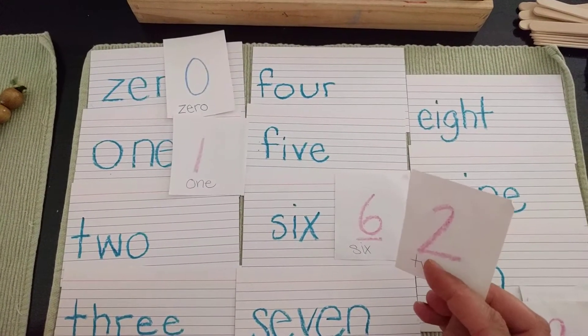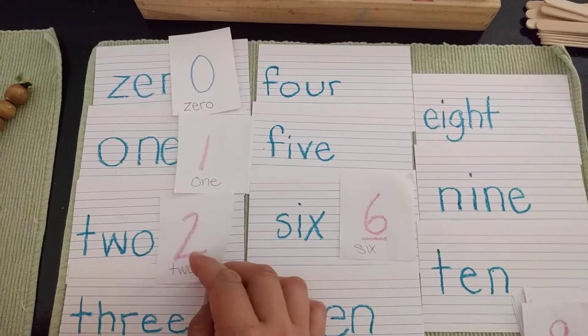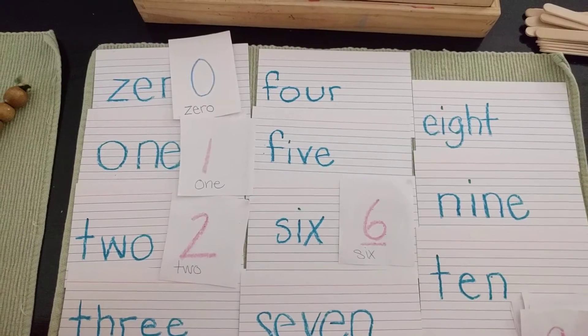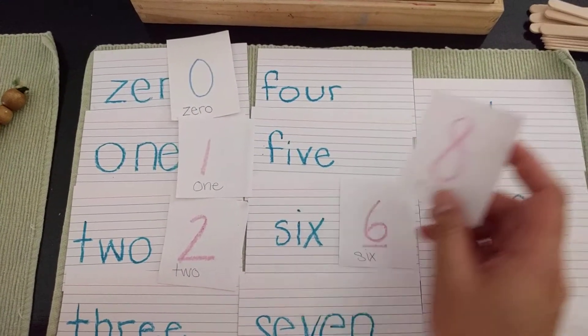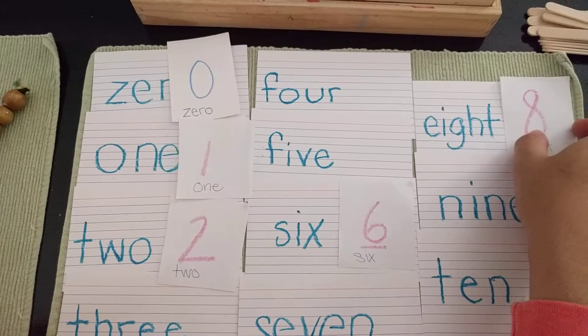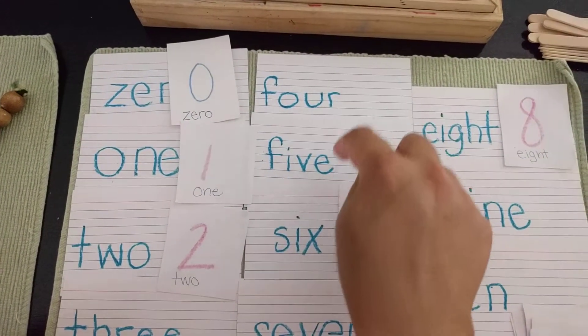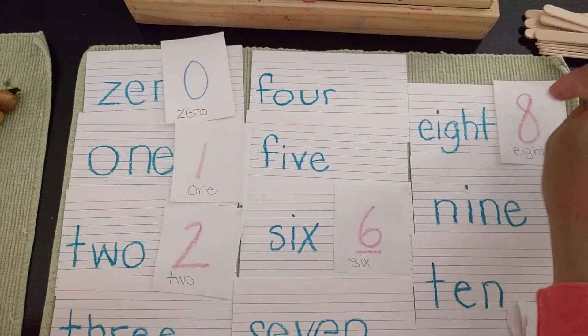This one has a two. One, two. What's this one? Oh, it's over here. Oh, let's get over there. Eight.